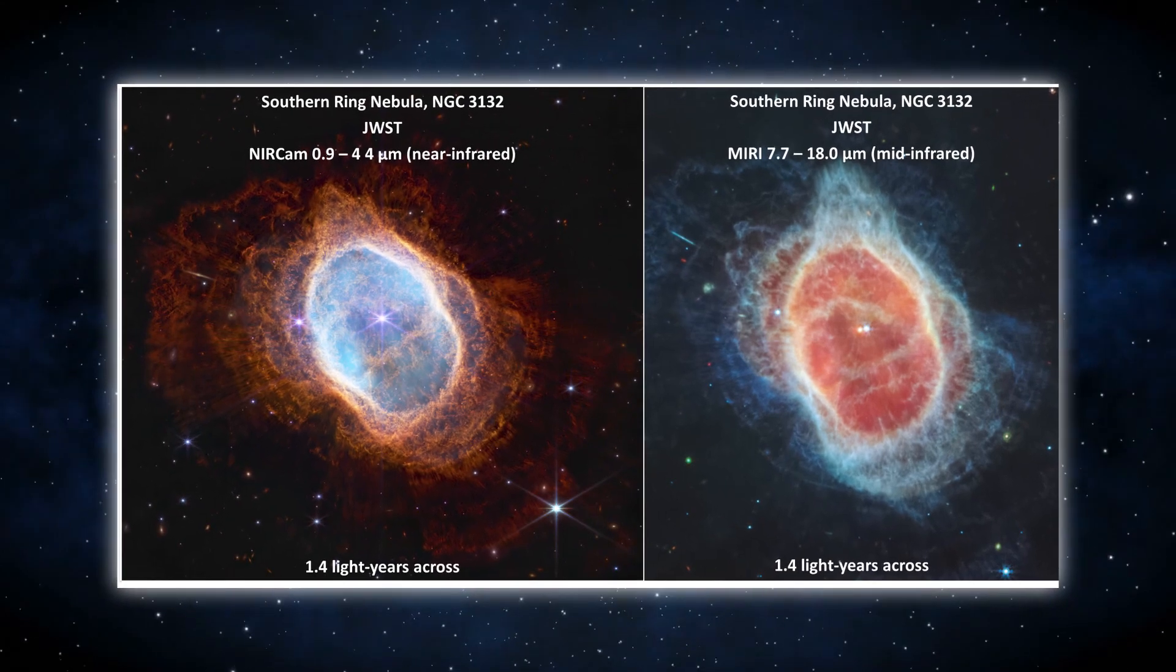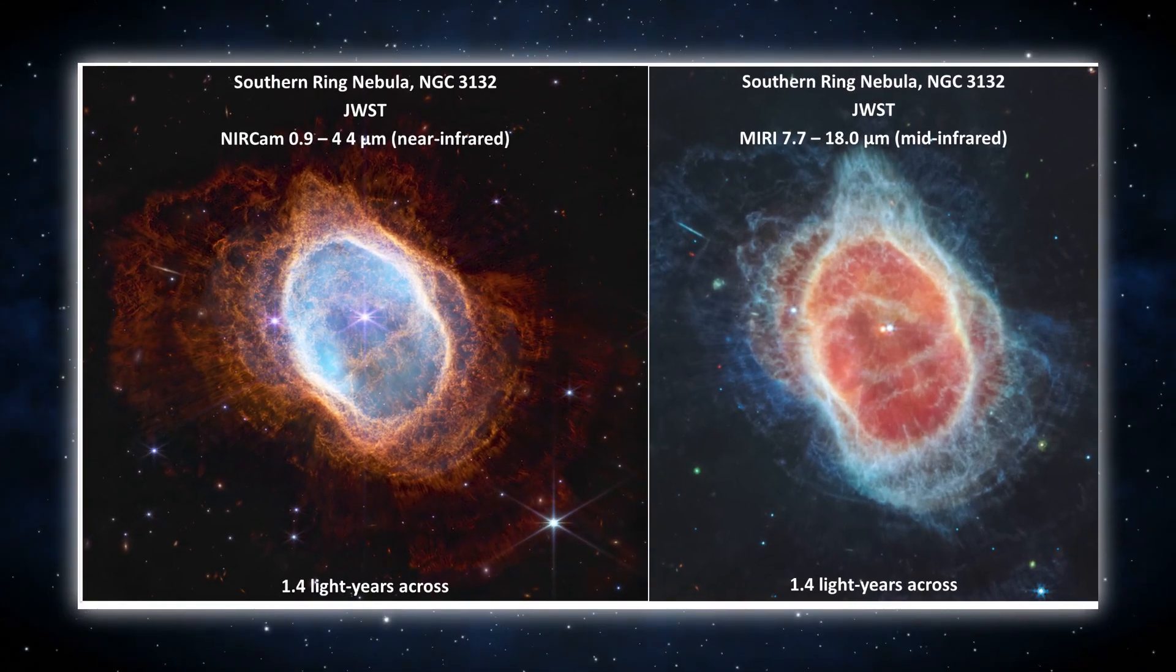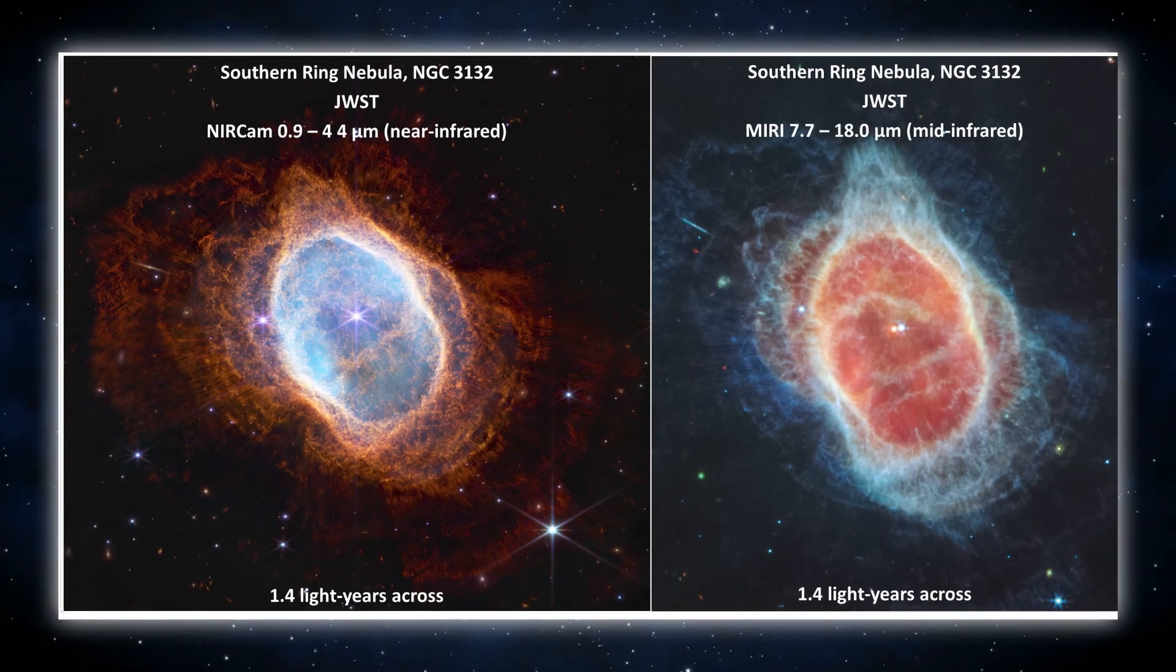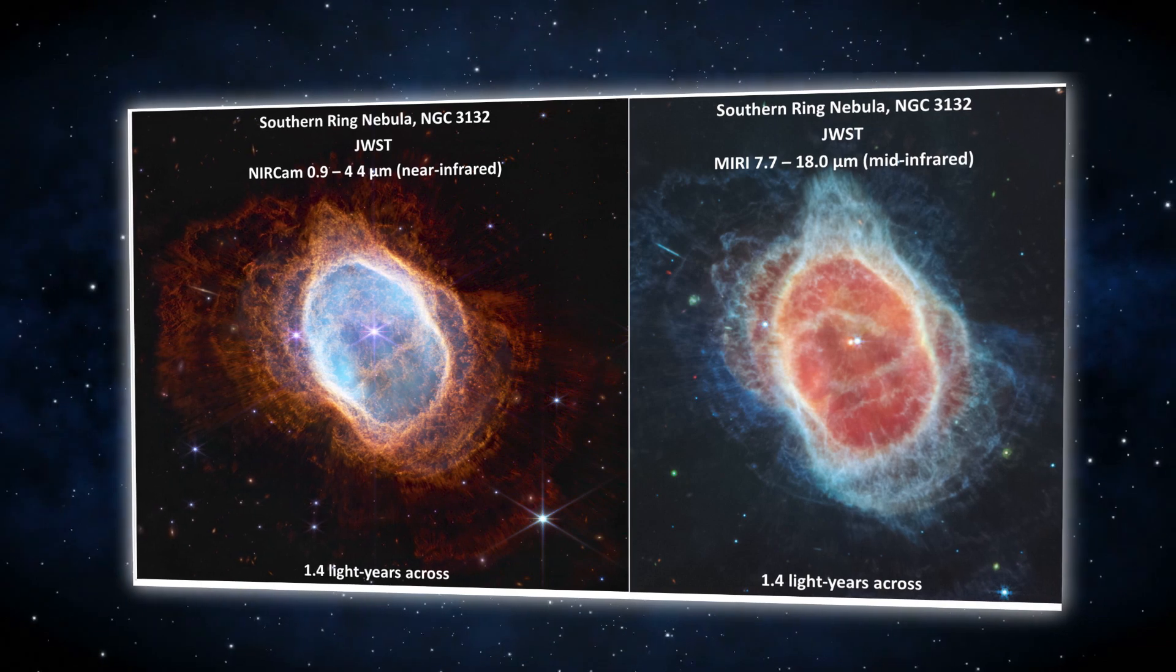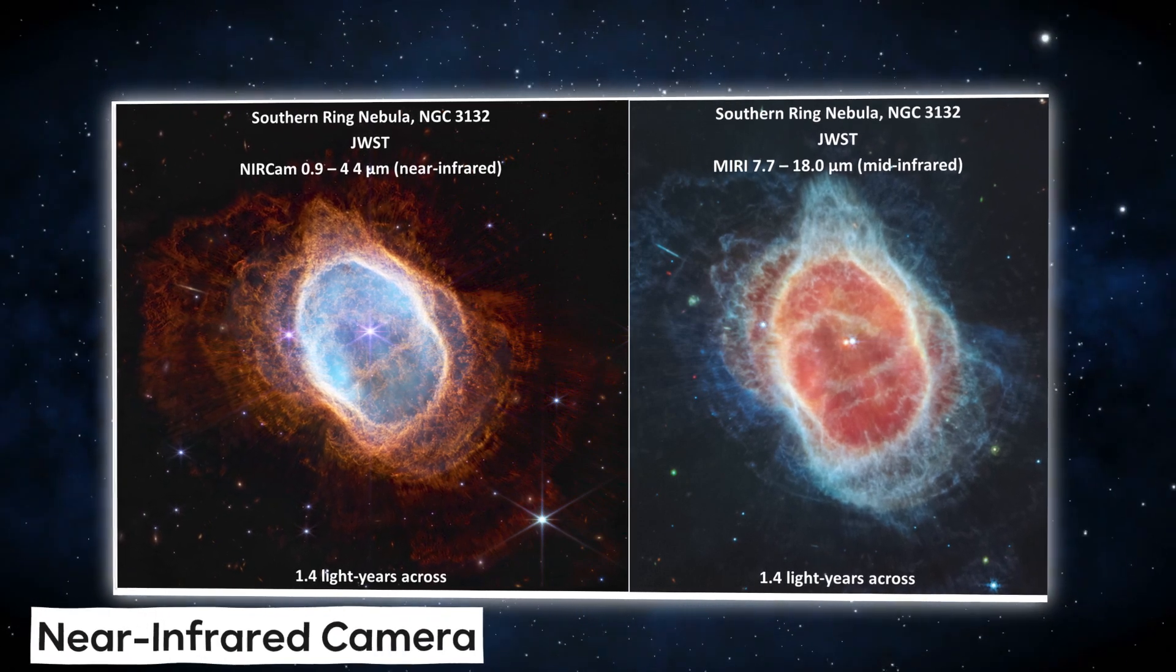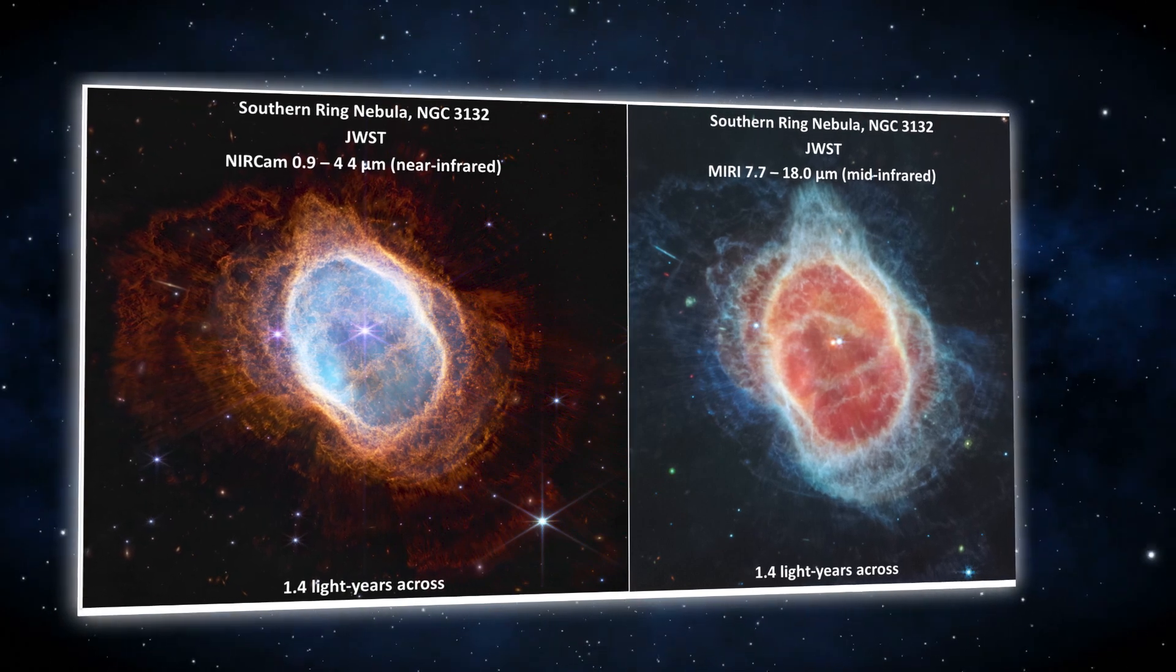The image on the right, captured by Webb's mid-infrared instrument, makes it clear for the first time that the second star is enveloped in dust, while the image on the left, captured by Webb's near-infrared camera, focuses more on the stars and the layers of light emanating from them.